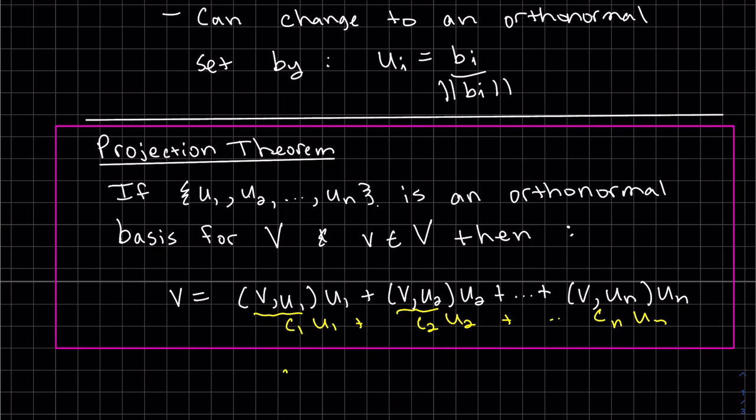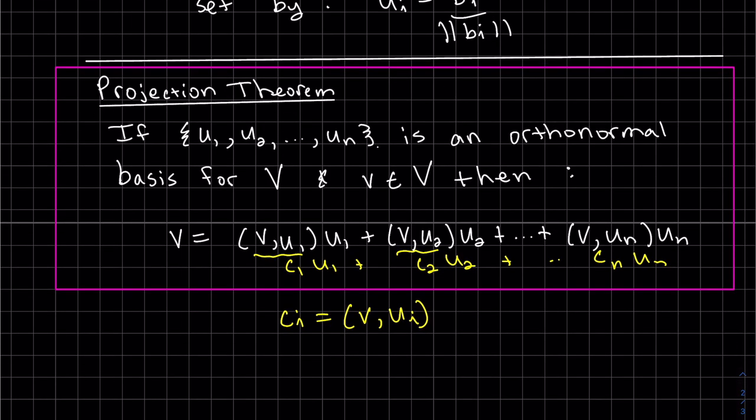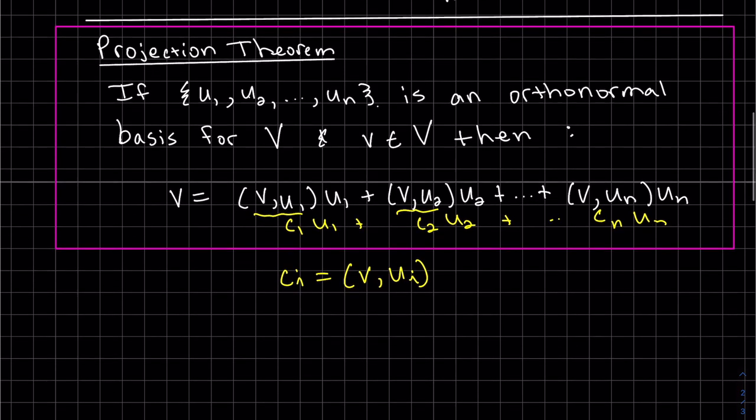So basically this is c1u1 + c2u2 + ... + cnun, where ci equals v·ui. That's what the projection theorem says. It can be written as a linear combination, but each constant can be found by finding the inner product of that vector and the bases. Pretty cool. Now I'm going to prove this. It's a super simple proof.